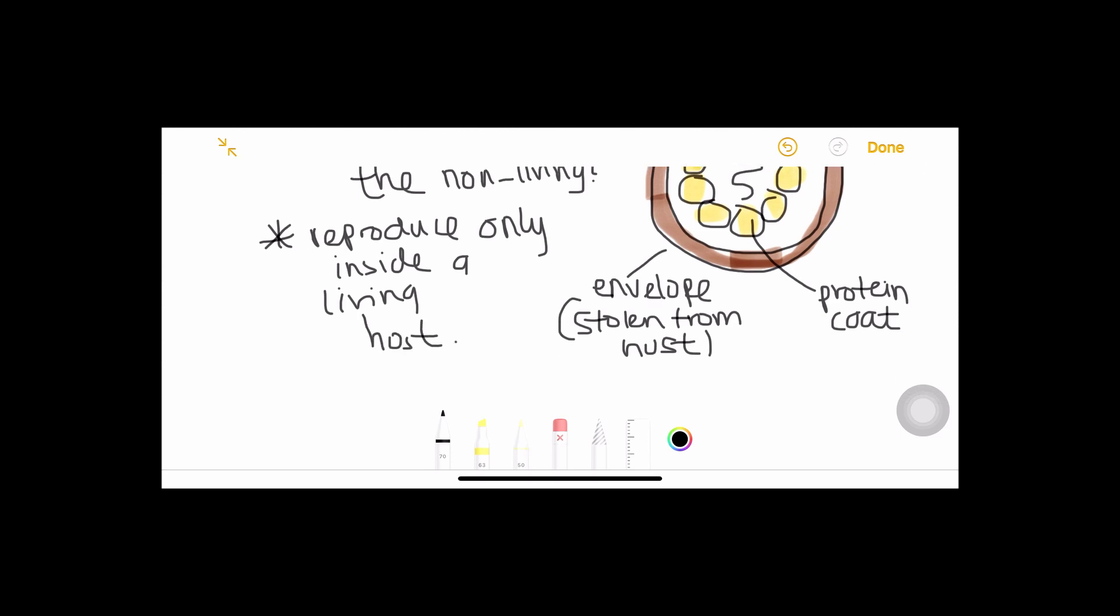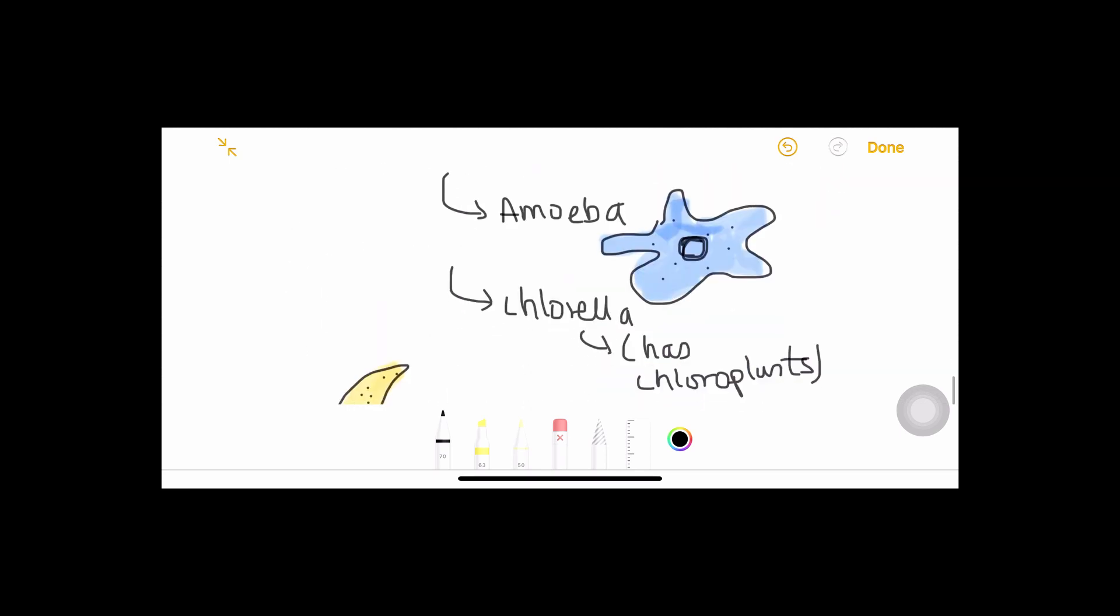They have a wide variety of shapes and sizes and examples could be the tobacco mosaic virus that causes the discoloring of leaves in the tobacco plants, and the influenza virus, HIV virus that causes AIDS. It's a very deadly pathogen. Last but not the least, I'll just give you a small introduction about protoctists.